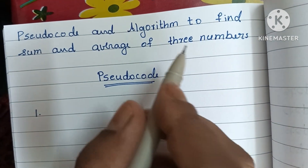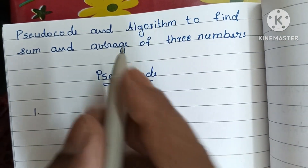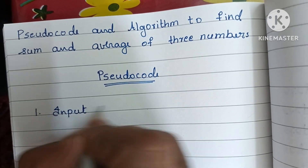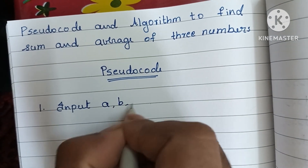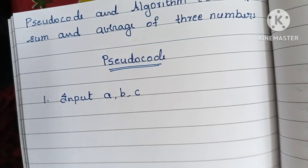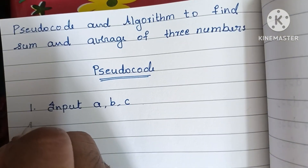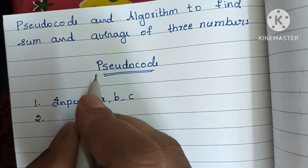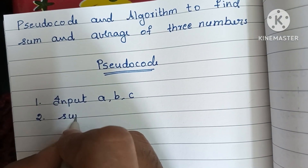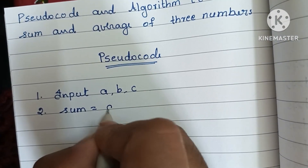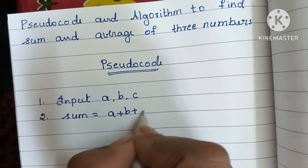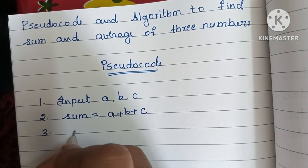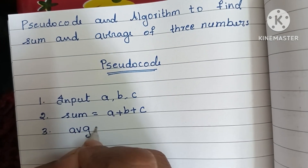To find sum and average of three numbers, first we have to read three numbers — input three numbers: a, b, and c. Variables a, b, c represent three numbers. Next, we have to calculate sum: sum is equal to a plus b plus c.